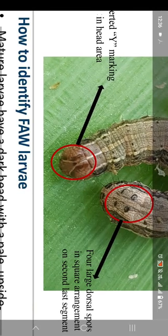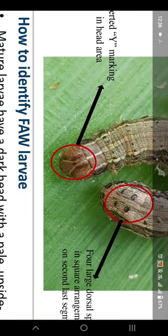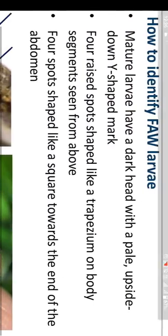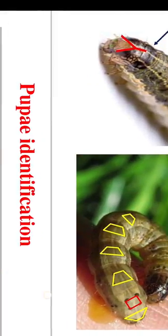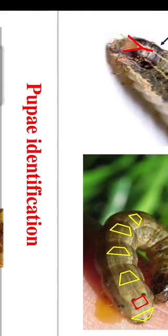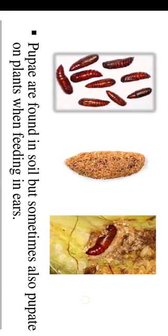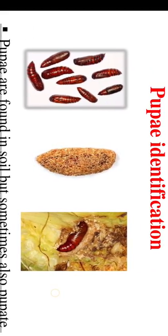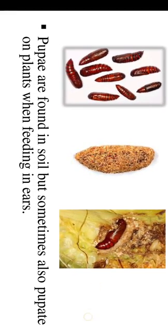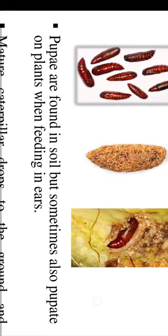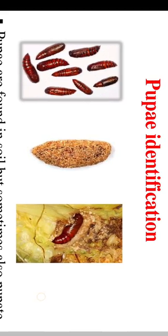Pupae identification: pupae are found in soil but sometimes also pupate on plants when feeding in ears. The mature caterpillar drops to the ground and burrows shallowly into soil, making an earthen cell by constructing a flimsy cocoon.